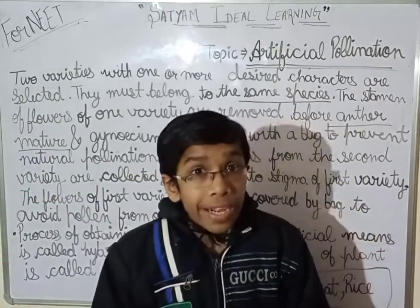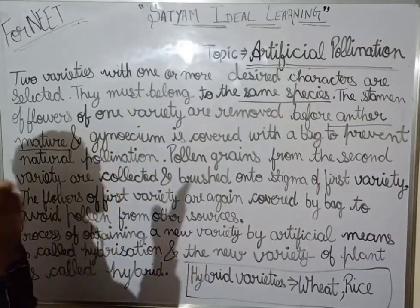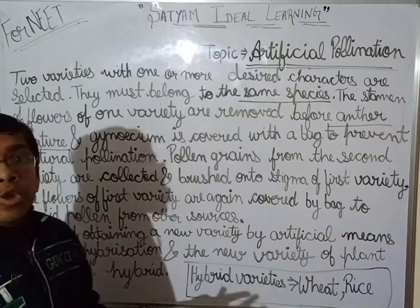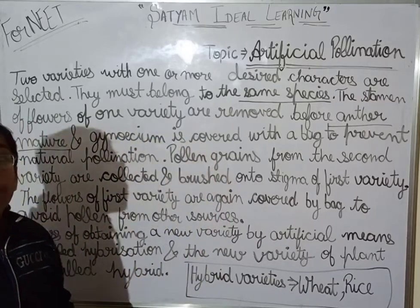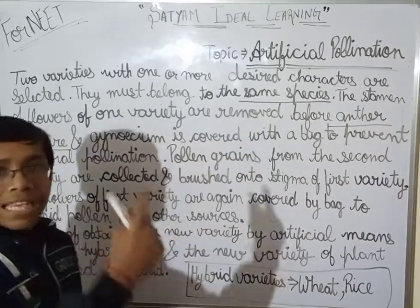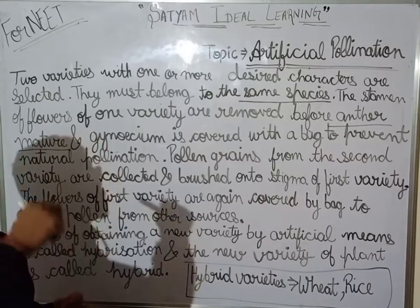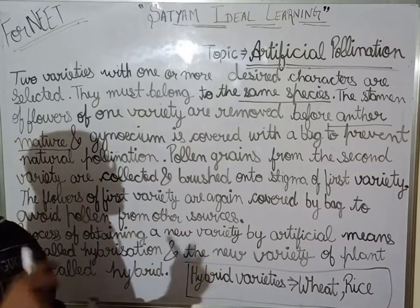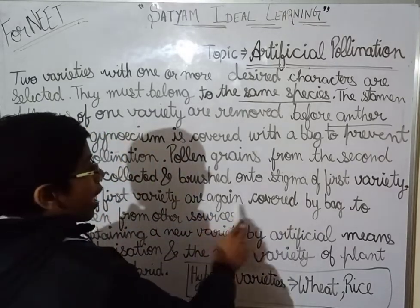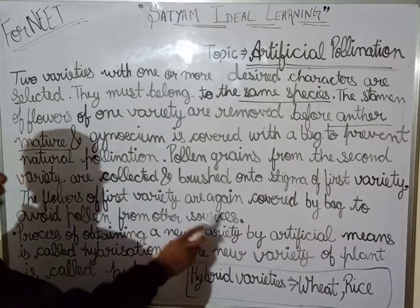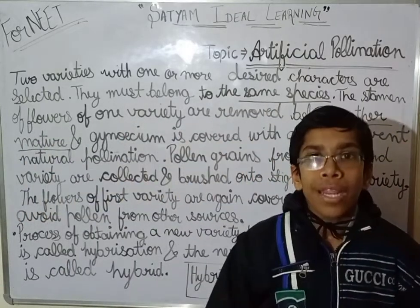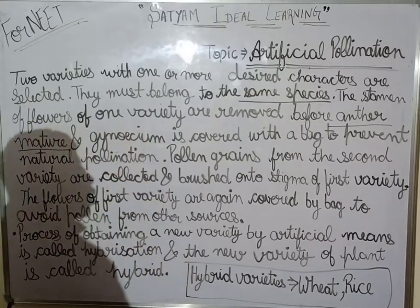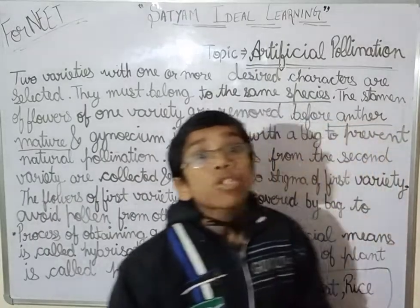To summarize: we take two varieties of plant, cut the stamen of one before the anther matures, cover the gynoecium with a poly bag to prevent natural pollination, then take pollen grains from the second variety and brush them upon the stigma of the first variety. The first variety is covered again to avoid pollen from other sources.